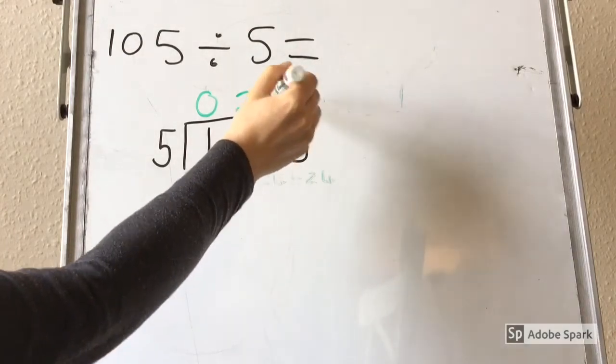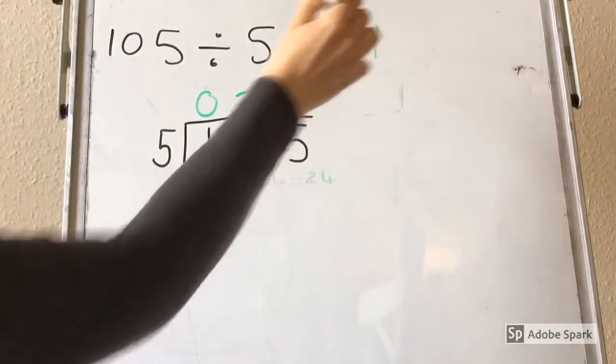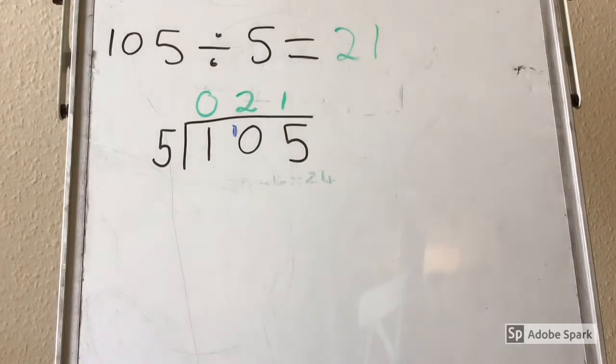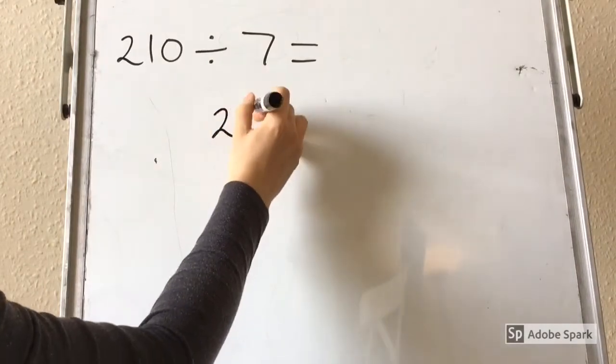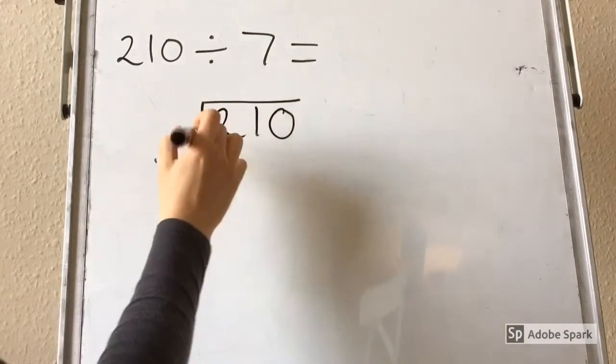So now I just need to ask myself how many 5's go into 5, and the answer is 1. So 105 divided by 5 is 21. Here is one to have a go at, lay out your bus stop and give it a try.